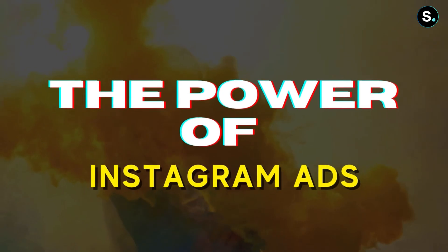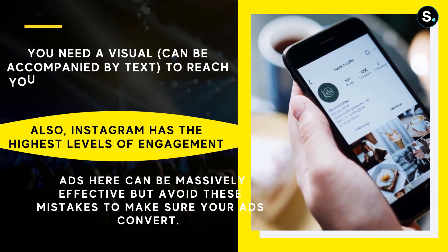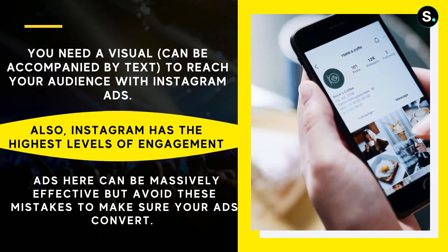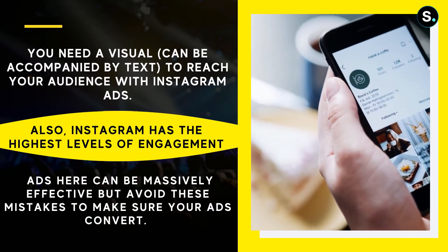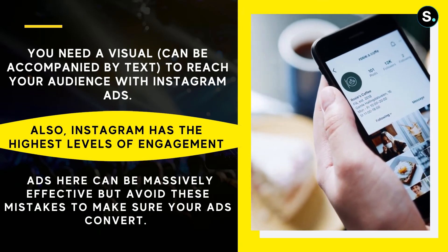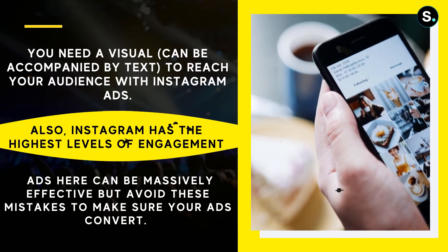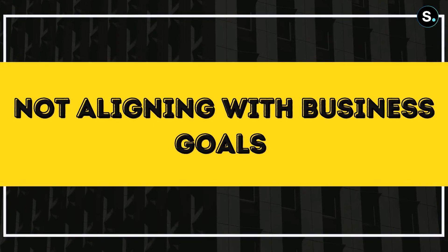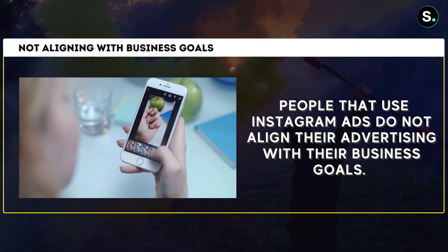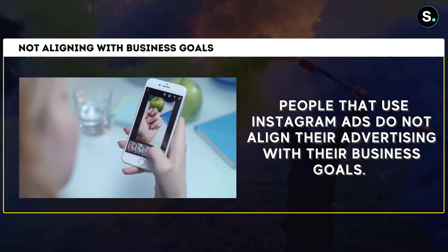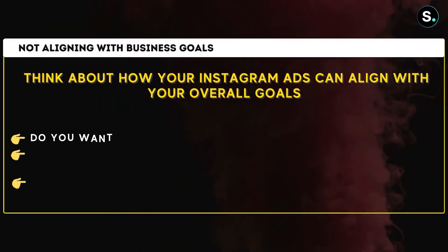Number three: the power of Instagram ads. Instagram is a visual platform — text ads are not a thing here. You need an image, a set of images, or a video, which can be accompanied by text to reach your audience. Instagram has the highest level of engagement of all major social media platforms, meaning ads on Instagram can be massively effective. Mistake number one: not aligning your ad with your business goals. A lot of people who use Instagram ads don't align their advertising with their business goals.